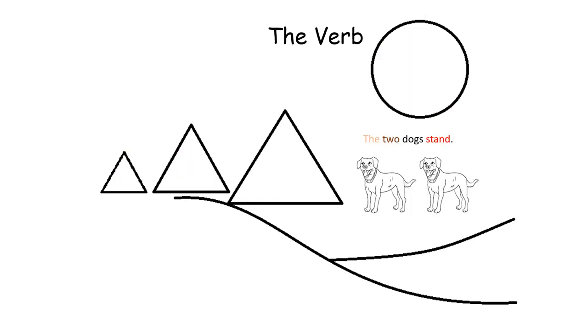You can see here in the sentence, the two dogs stand, that I have colored the word stand red. It describes what the dogs are doing. Therefore, stand is a verb.